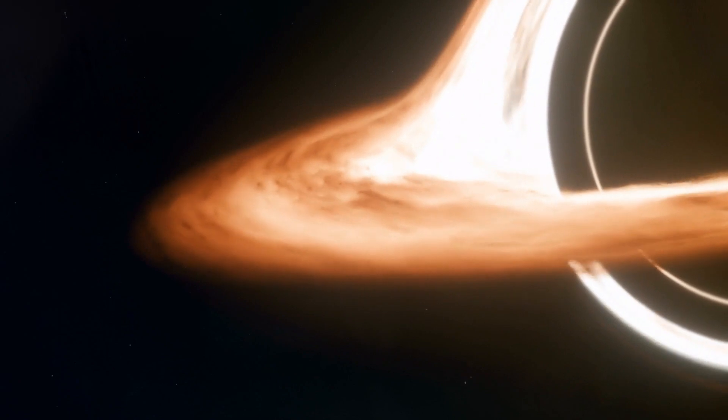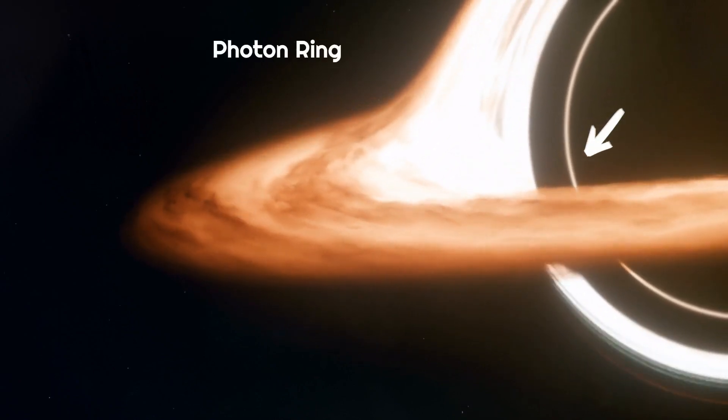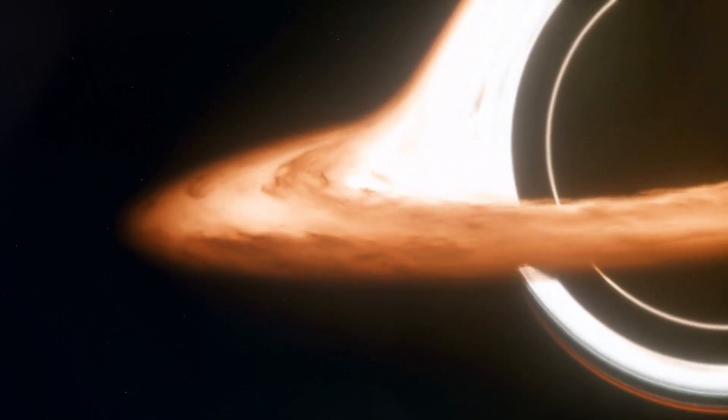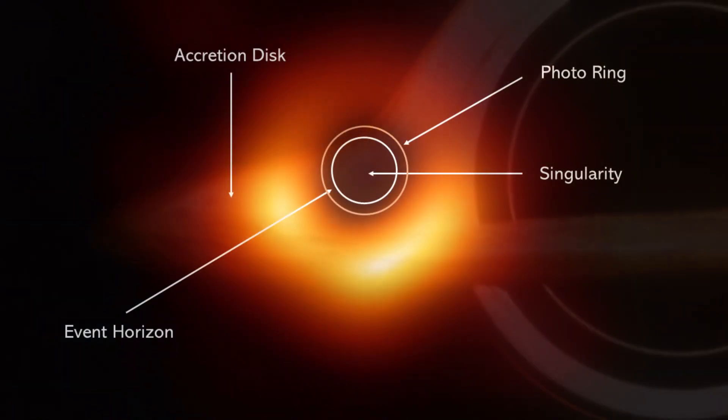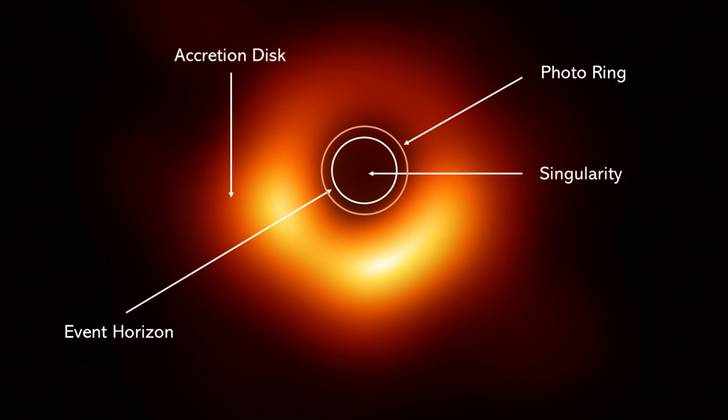The photon ring is a direct consequence of the warping of space-time caused by the black hole's immense gravity and the effects of its rotation. The photon ring is formed due to the extreme gravitational lensing and bending of light near a rotating black hole, as predicted by Albert Einstein's theory of general relativity.